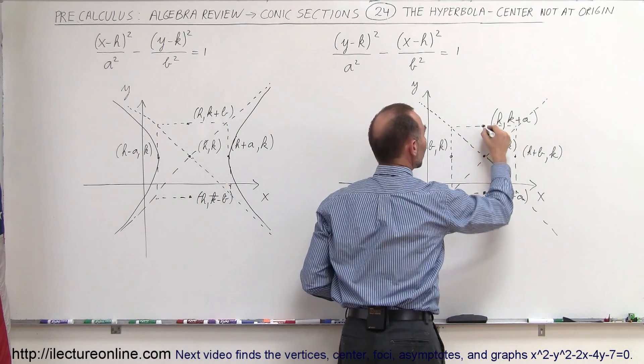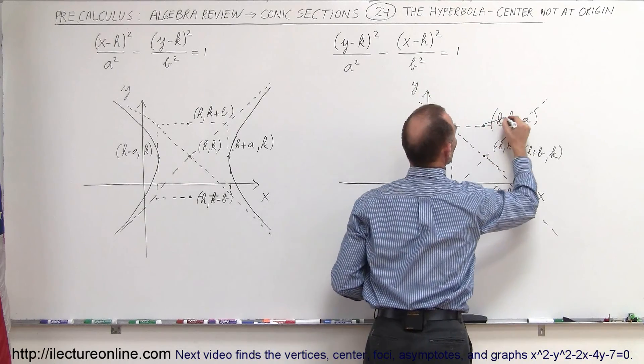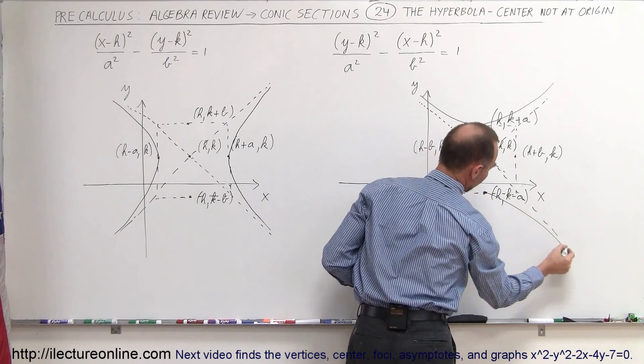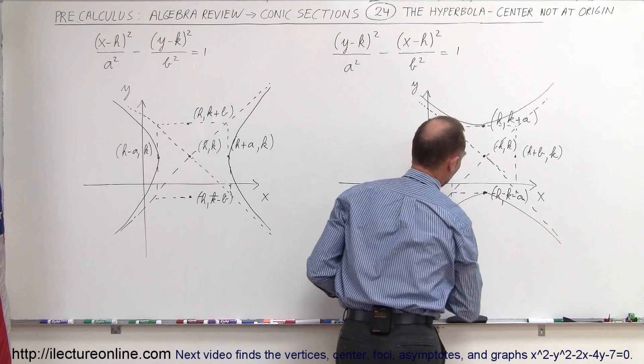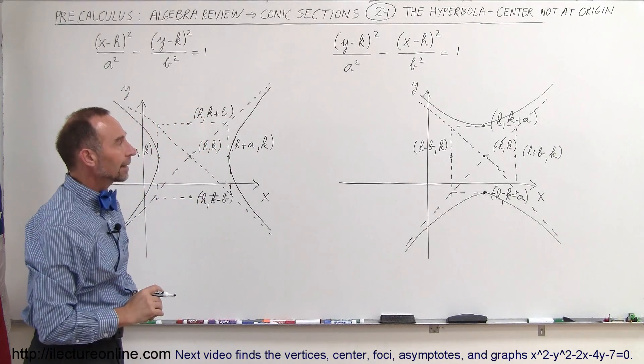Now we know that the hyperbola is going to open up like this. These are the vertices, and we know that we stay within bounds of those two lines right there. So look at this, and like this here, and over here to look like this, and like that. So that will be the way you draw your hyperbola in that case.